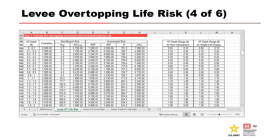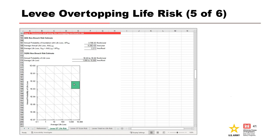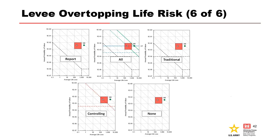Step two estimates the system response curve for overtopping with breach, requiring the user to input up to five overtopping depths and corresponding system response probabilities. A chart of system response probability versus overtopping depth is generated. Step three estimates the overtopping non-breach and incremental levee risk using data from steps one and two — no user input is required, and the data tables are used in step four. Step four generates the plotting data and plot for non-breach risk with no user input. Step five generates plots for overtopping incremental risk; the user only selects reference lines to display on the risk matrix.